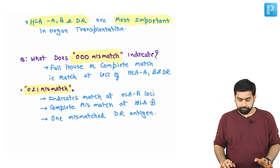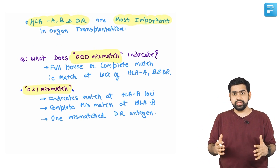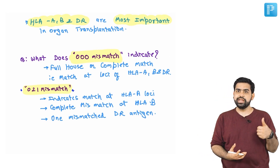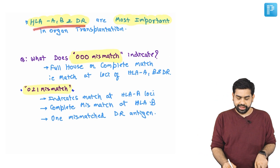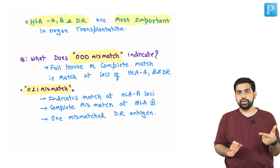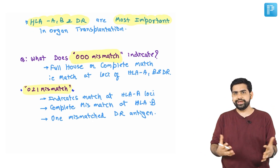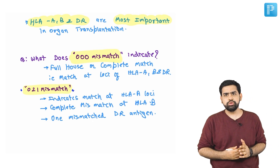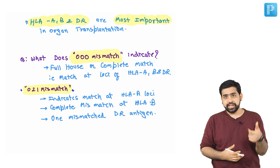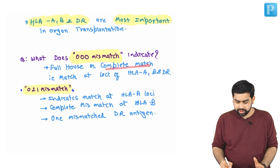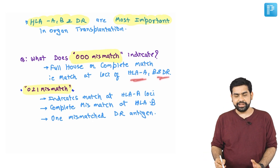HLA can be of various types — A, B, C, and others — but the three most important ones considered in organ transplantation are HLA-A, HLA-B, and HLA-DR. When performing an HLA match, results are reported as a mismatch notation. For example, 0-0-0 mismatch means there is a 100% match at all three loci: HLA-A, HLA-B, and HLA-DR.